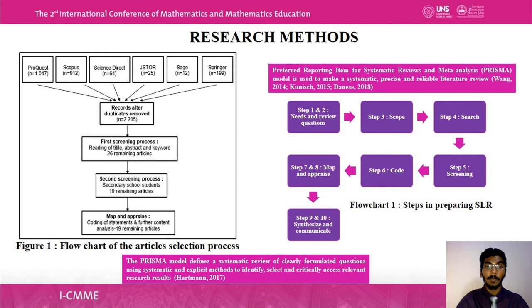The fourth step used the keywords 'project-based learning,' 'mathematics,' 'mathematics education,' 'secondary school,' and 'high school' to find articles. We acquired 2,259 potential articles from six different databases. Articles published from 2018 to 2022 only were included.